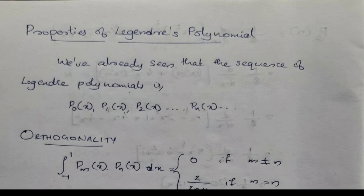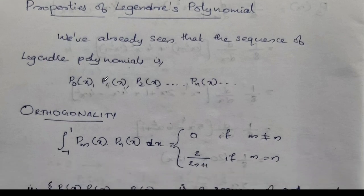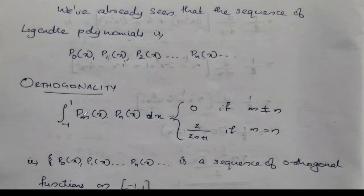Good Morning! We have a property of the Legendre Polynomial. The integral of Pm Pn dx is equal to 0 if m is not equal to n, and 2 divided by 2n plus 1 if m is equal to n.